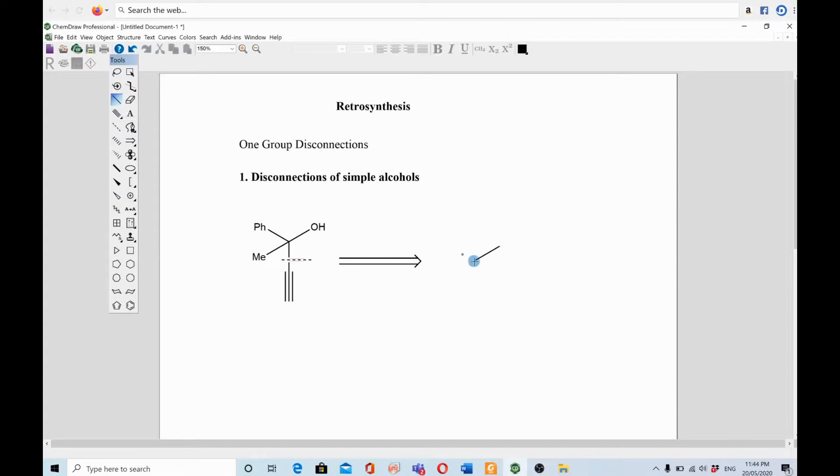As a result you will get ketone on one side and other groups as acetylide on the other side. What will happen is OH will be converted into carbonyl group and the rest of the groups will remain as such, like phenyl will be phenyl because we are not touching these parts. We are not doing disconnection on phenyl or anything.